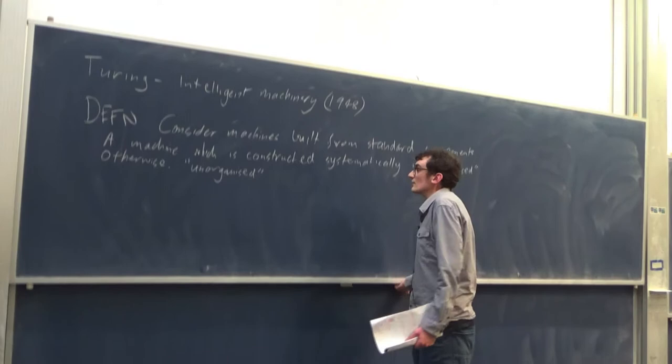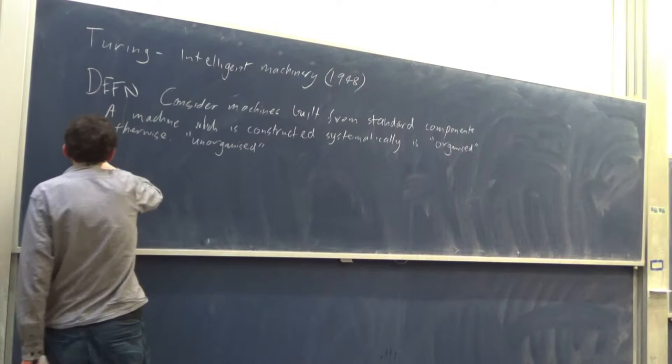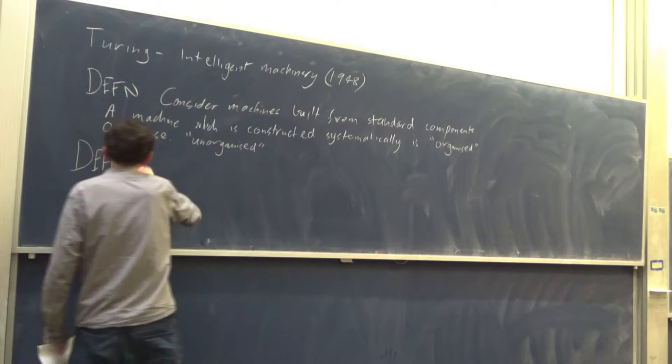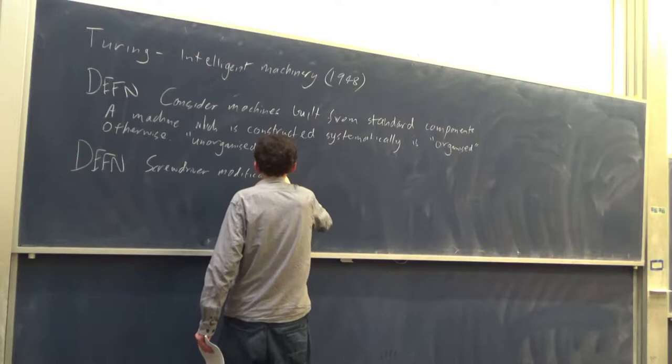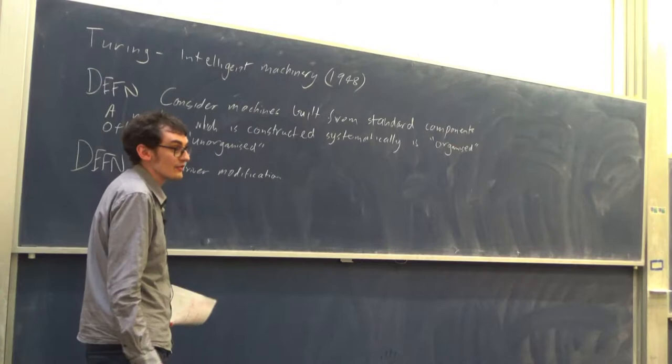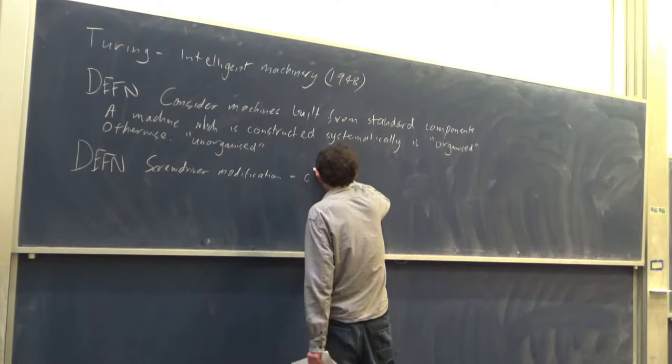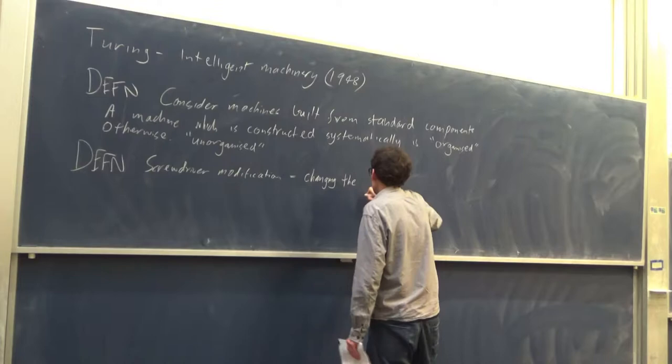The other definition that Turing gives is of two types of modifying a machine. One of those is called screwdriver modifications, or screwdriver interference. That is basically taking a machine apart and rebuilding it from scratch to do something different — more precisely, it's changing the architecture of a machine.